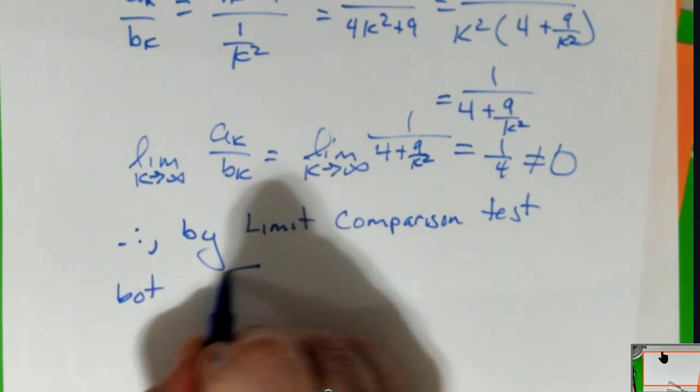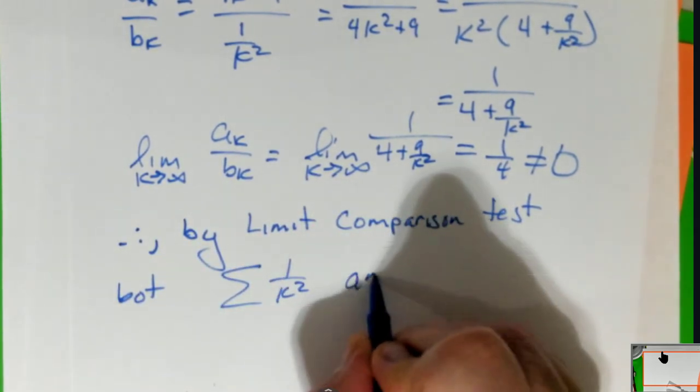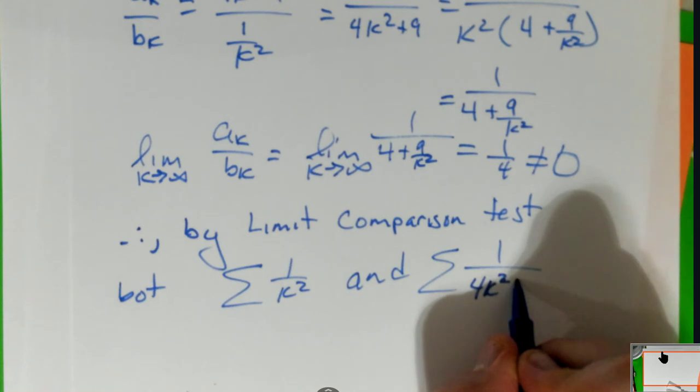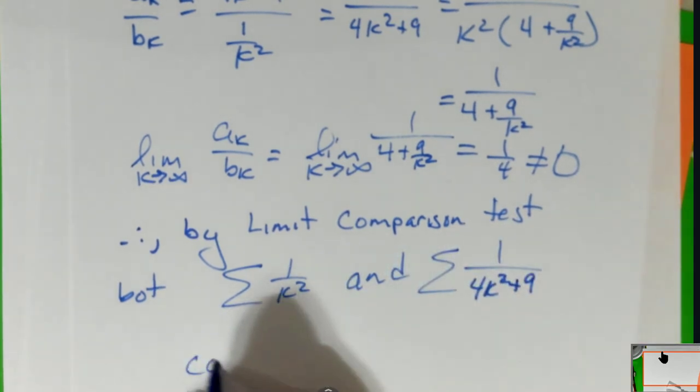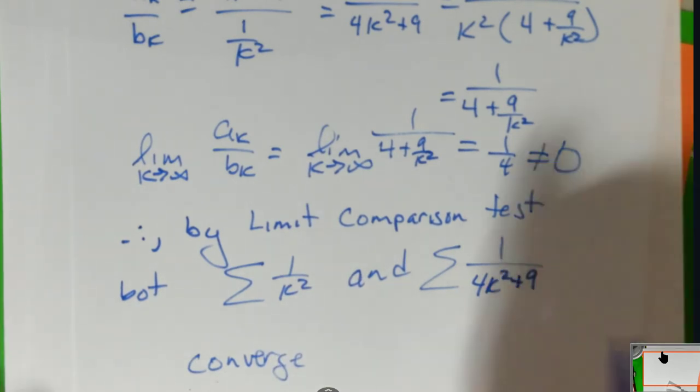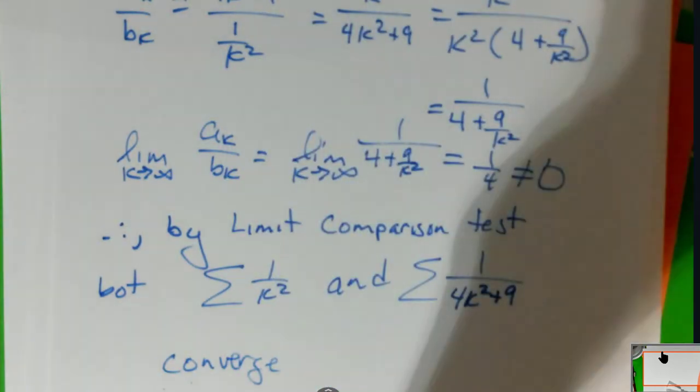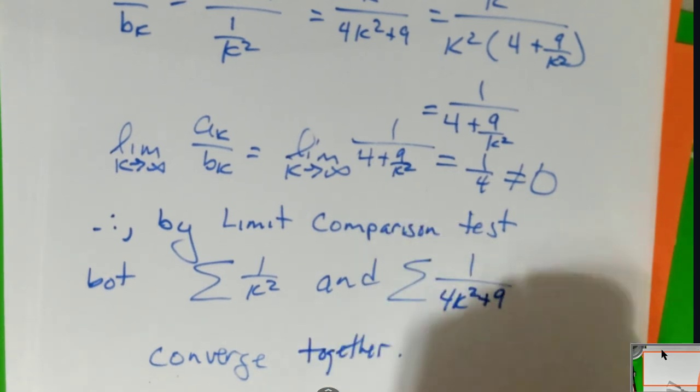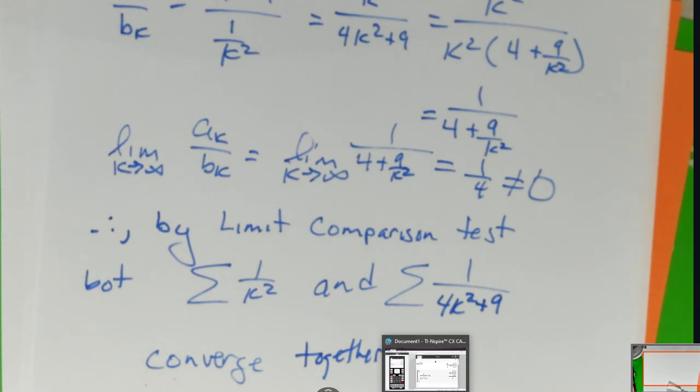Therefore, by the limit comparison test, both the series converge. I keep wanting to put the four in the numerator, I don't know why, for the love of Newton I'm doing that. You know what, I just compared it to a different series. But I could have done this last example. Instead of using the integral test, I could have compared the series one over four k squared plus one to this one over k squared series, which is a convergent P series. I'd still come up with the same limit, and therefore it converges. So as you can see, there are different ways to do these problems.